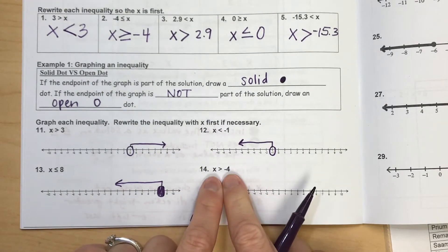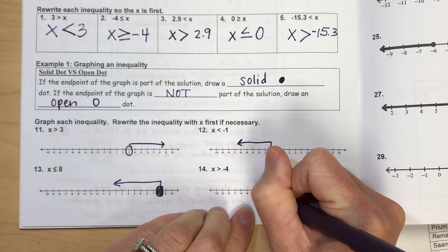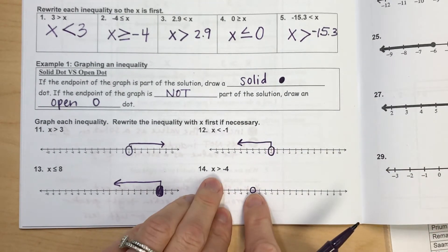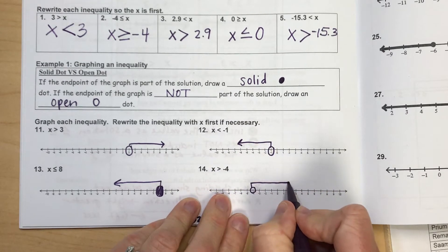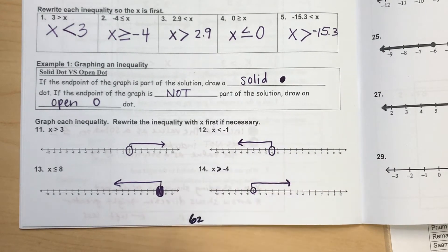And then for x is greater than negative 4, I'm going to circle negative 4. I'm not going to fill it in. And greater than, I'm going to shade towards the right, since my arrow points towards the right.